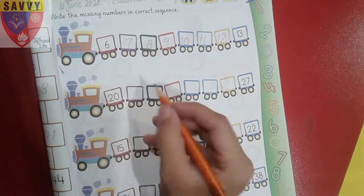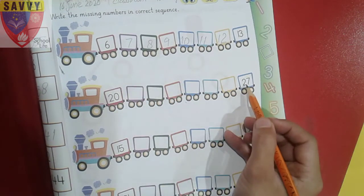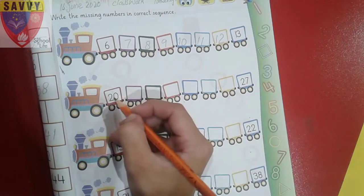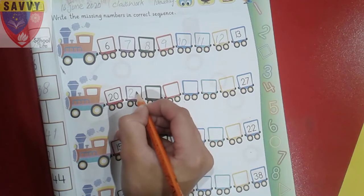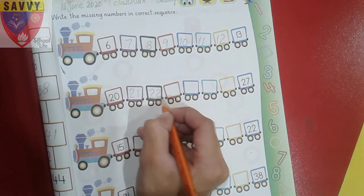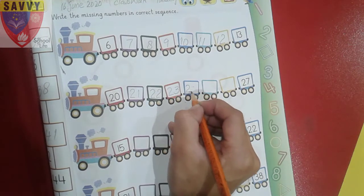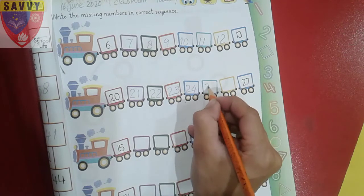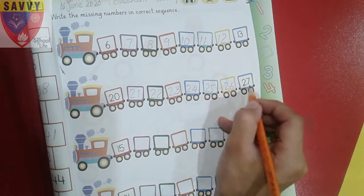Twenty. We write the missing numbers from twenty to twenty-seven. So let's start. After twenty comes twenty-one, twenty-two, twenty-three, twenty-four, twenty-five, twenty-six, and twenty-seven.